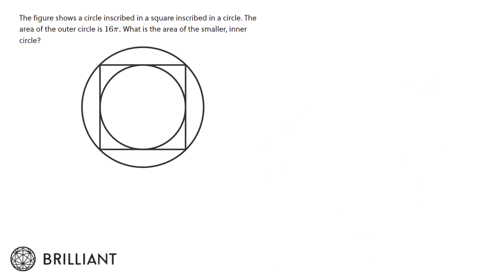Let's look at another one. This figure shows a circle inscribed in a square inscribed in a circle. The area of the outer circle is 16 Pi — what's the area of the smaller inner circle? Once again taken from brilliant.org. Why don't you pause the video and try yourself using those two tricks.